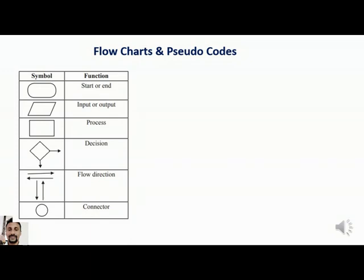Now we will see the symbols used for flowcharts. The first one is Start/End, the second is Input/Output, the third is for Process, the fourth is for Decisions, the next is for Flow Direction, and the last one is for Connector. Connectors are not used all the time — they are used when you don't have space on your drawing page and need to connect to the next page, showing where you stopped and where you are going to start.